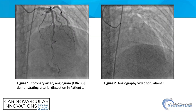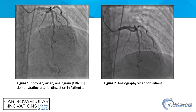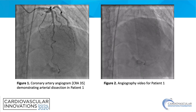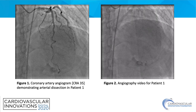Here we have figure 1 and figure 2. Figure 1 is the coronary artery angiogram for patient 1, and figure 2 is the angiography video. The cranial projection of patient 1's angiogram shows a variation in lumen size, most notable in the mid to distal segment, which is very consistent with a spiral dissection. Also, the blush of contrast that we see is extracardiac — that's kidney calyces. The angiography video for patient 1 confirms the spiral dissection.